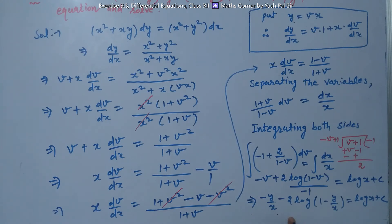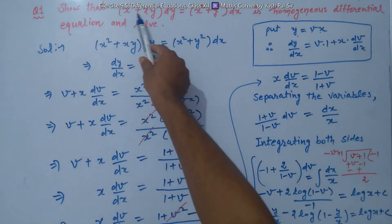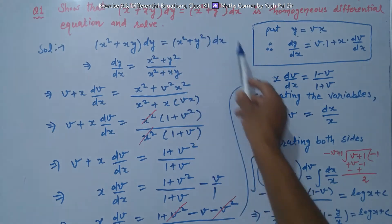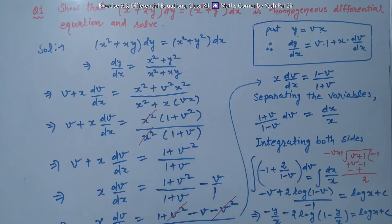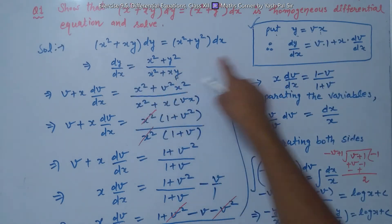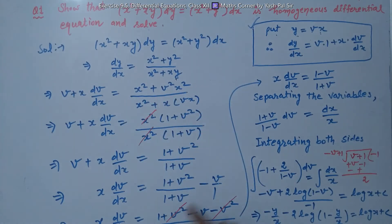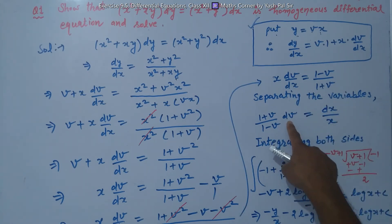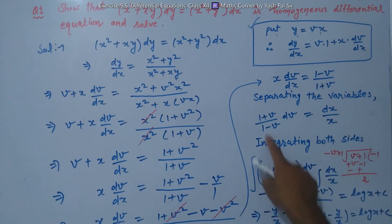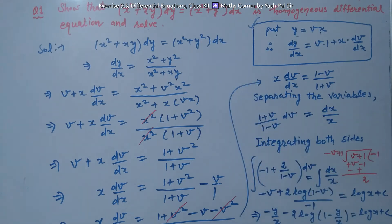This is the general solution of the given homogeneous differential equation. To summarize: first we proved the equation is homogeneous, then we put y equals vx, so dy/dx becomes v plus x dv/dx. We separated variables, keeping dv on one side and dx on the other, then integrated both sides to obtain the general solution.